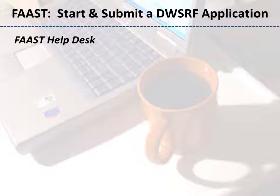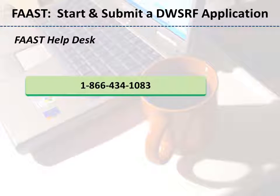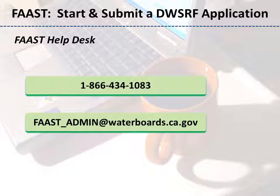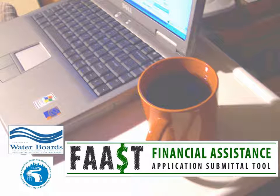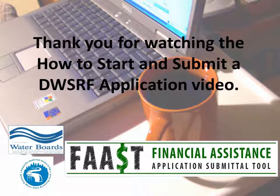If you have questions or need assistance in starting and submitting a DWSRF application, please contact the FAST Help Desk at 1-866-434-1083, or email at fast-admin@waterboards.ca.gov. The FAST Help Desk is staffed Monday through Friday from 8 a.m. to 5 p.m. Thank you for watching the How to Start and Submit a DWSRF Application video.